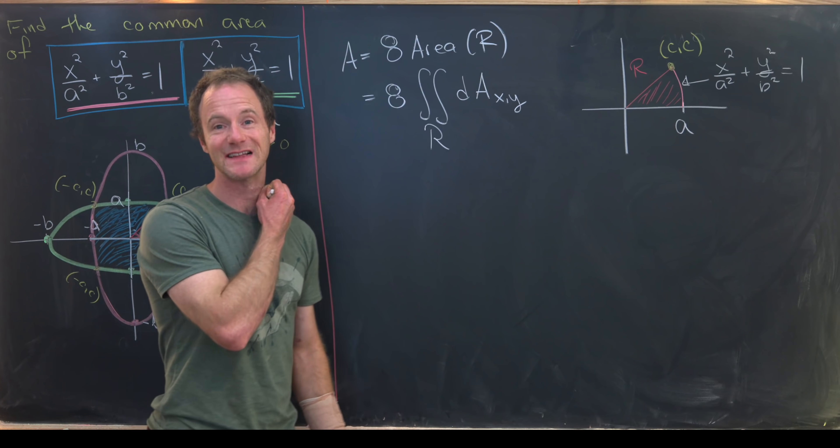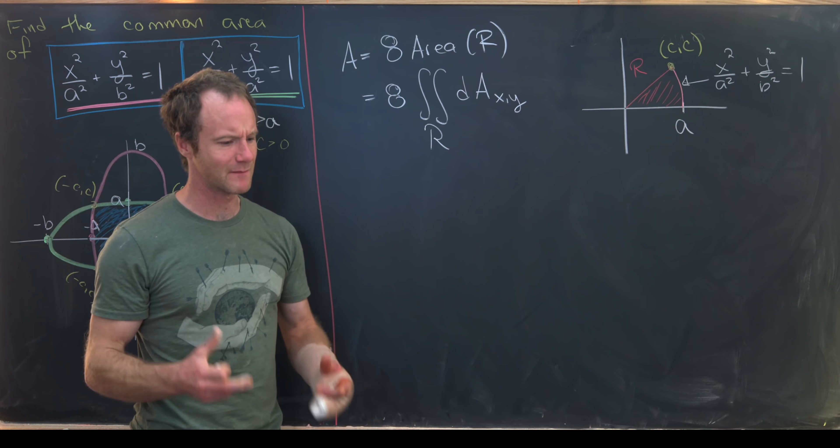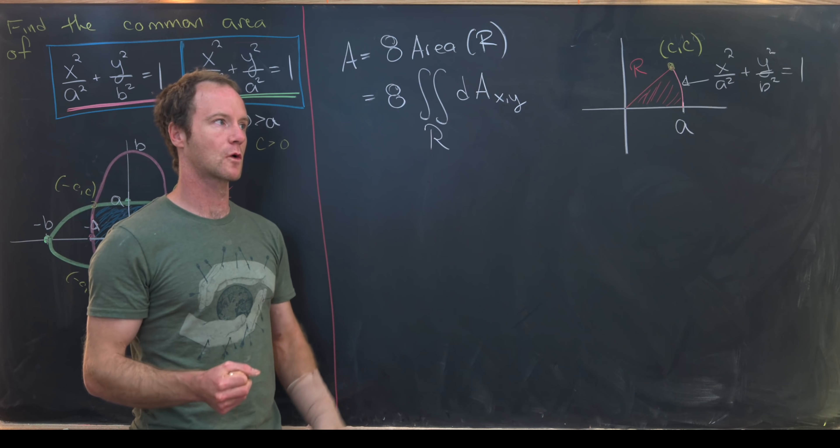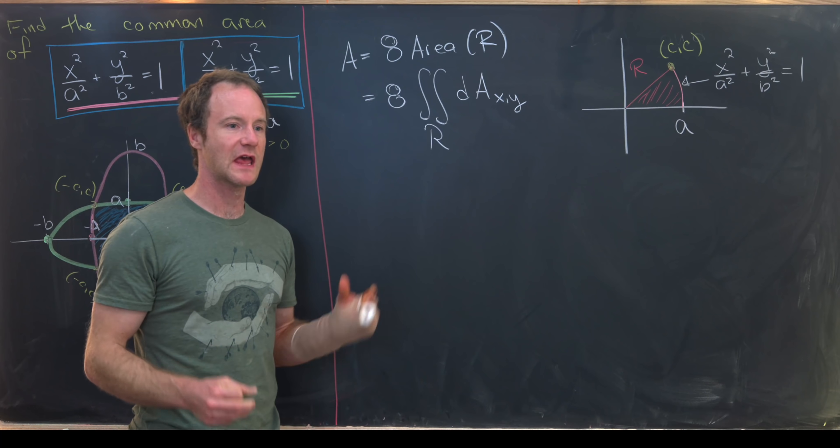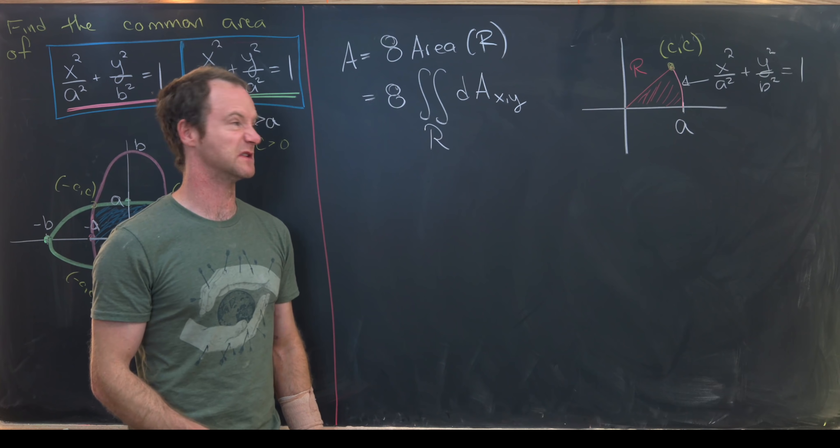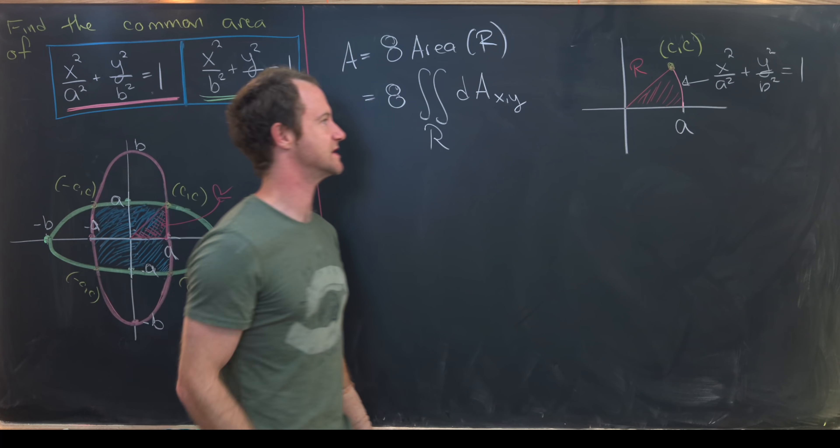Now looking at this, we see that's almost the area of a circle, so we might want to use something that looks like polar coordinates. But polar coordinates only work for perfect circles and we have an ellipse. So we want to hack polar coordinates a little bit to make this work.